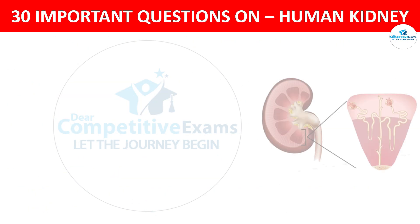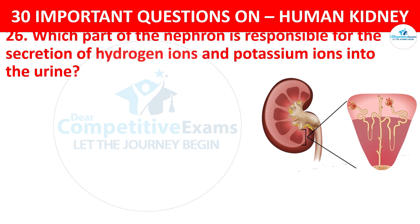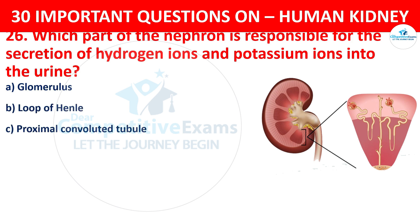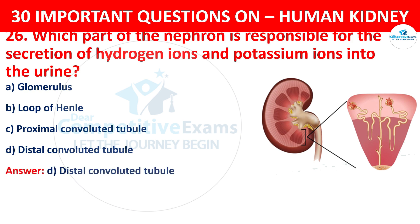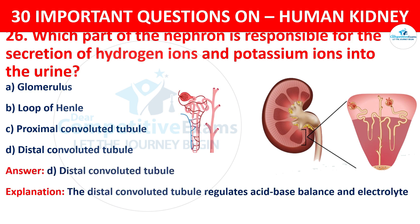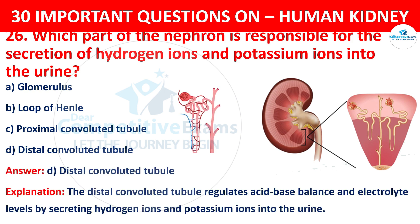Question number 26. Which part of the nephron is responsible for the secretion of hydrogen ions and potassium ions into the urine? Your options are glomerulus, loop of Henle, proximal convoluted tubule, or distal convoluted tubule. The correct answer is D, that is the distal convoluted tubule. The distal convoluted tubule regulates acid-base balance and electrolyte levels by secreting hydrogen ions and potassium ions into the urine.